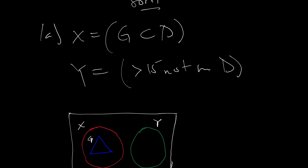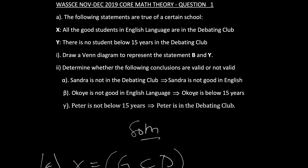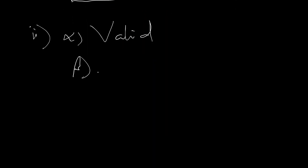Now beta: Okoye is not good in English implies Okoye is below 15 years. We know that there is no student below 15 years in the debating class, but we didn't say there is no student below 15 years who is good in English. So there is no relation between being below 15 years and being good in English. There is no complete information to justify this, so beta is invalid.